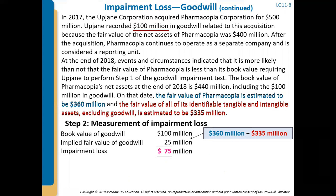We need to figure out exactly how much of an impairment loss there is. The book value of goodwill was $100 million. The implied fair value of goodwill is now $25 million, which we get by taking the fair value of Pharmacopia ($360 million) minus the fair value of all identifiable assets excluding goodwill ($335 million). The difference of $25 million is the implied fair value of goodwill. So we have goodwill on the books at $100 million, the implied fair value is only $25 million, meaning the impairment loss is $75 million.